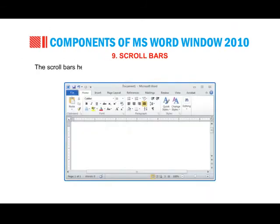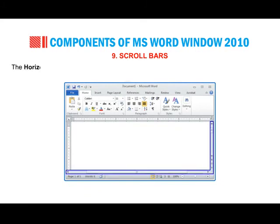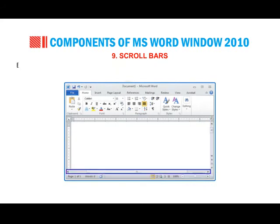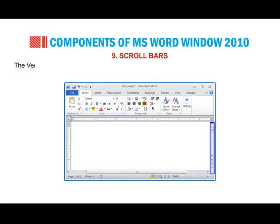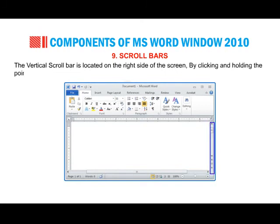Scroll Bars: the scroll bars help you to navigate through different portions of a document. The horizontal scroll bar is located at the bottom of the page, just above the status bar. By clicking and holding the pointer of the horizontal scroll bar, you can navigate from left to right. The vertical scroll bar is located on the right side of the screen and lets you navigate from up to down.